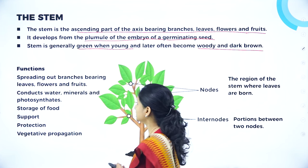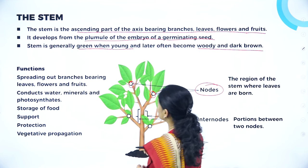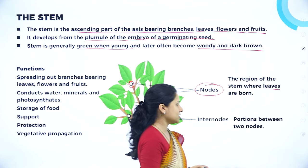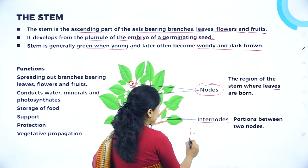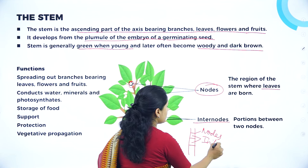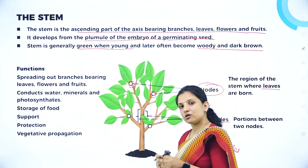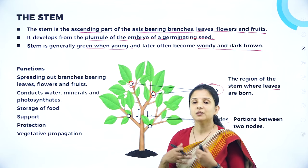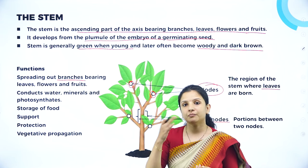The different regions of the stem include nodes and internodes. From the nodal region, the leaves arise, the branches arise, and flowers can also arise — wherever especially the leaves are born, that is called the nodal region. The internode is the portion between two nodes. Functions of the stem: stems help plants to spread out branches and bear leaves, flowers, and fruits, which are very important for plants to complete their life cycle.